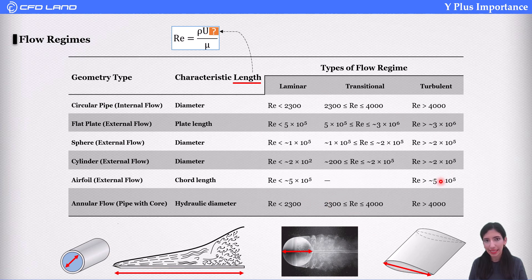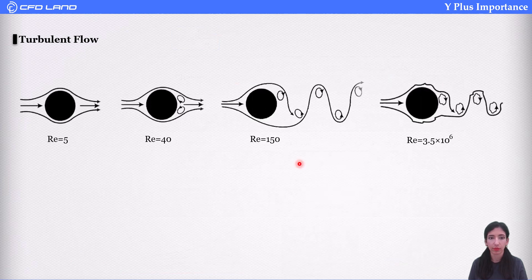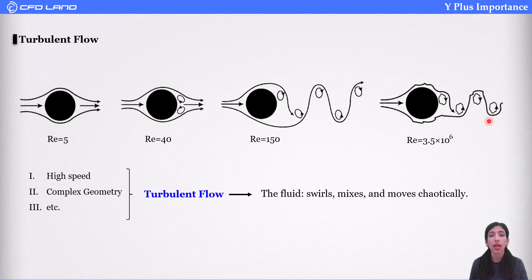As you can see, for problems with different geometries, the critical range of Reynolds number separating laminar and turbulent flow varies. As velocity increases, Reynolds number increases, and the flow becomes turbulent. So high speed is one of the factors affecting our flow. Other things like geometry, for example, roughness of surface can also affect flow.